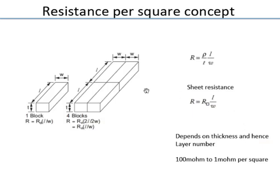There is a concept of resistance per square, which is very useful because the thickness of the wires is fixed by the foundry. As a designer, you have control over widths and lengths. With architectural and micro-architectural changes, you can try to place things closer to reduce wire length.